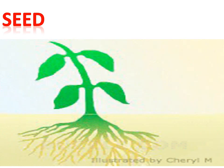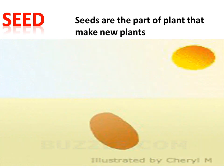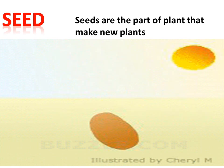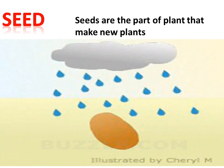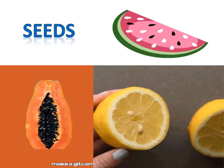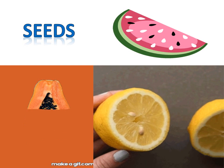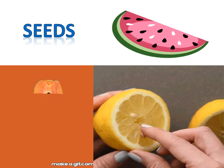Next is the seed. Seeds are the part of the plant that make new plants. If you want to make new plants, seeds are necessary. When they germinate — that means start to grow — they will develop into new plants. Seeds are found in fruits and vegetables.